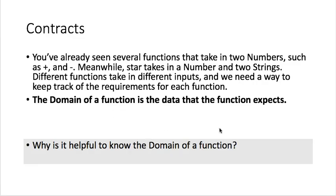So that's the end of data types. And now we're going to see how we can use data types in our programming. So we've already seen functions that take in two numbers, such as plus and minus. And then we saw that star is a function that takes in a number, which was the size, and two strings, which told star how to behave. And then that output an image. So different functions take in different inputs, and we need a way to keep track of the requirements for each function.